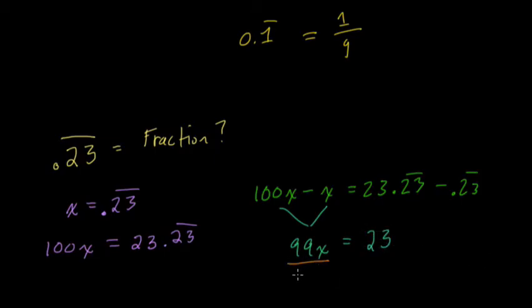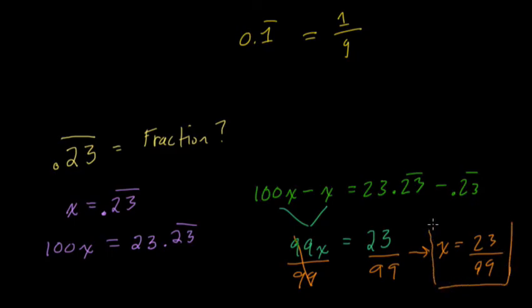We want to know what x equals, divide by 99. And these 99s cancel out, and then we have our answer. x equals 23 over 99. And I encourage you to enter this into a calculator. It's nice to see that it works. 23 over 99. Divide it, and you will get this decimal. It's true. These are equivalent.